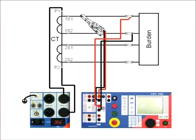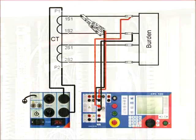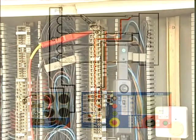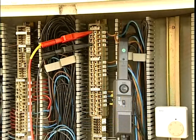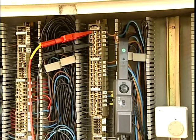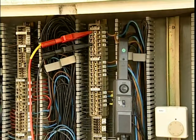The secondary current can also be measured using a current clamp. In this case, the secondary circuit does not need to be opened.